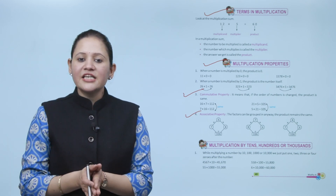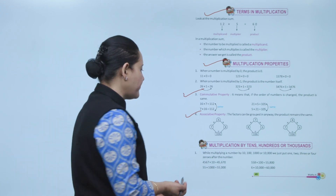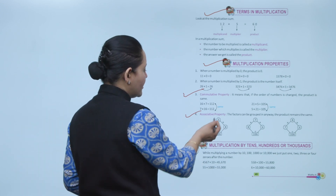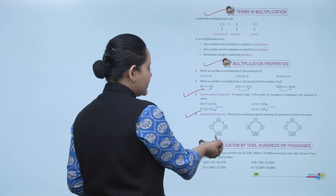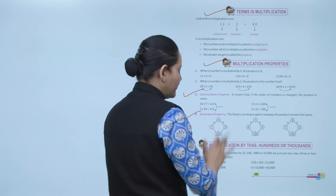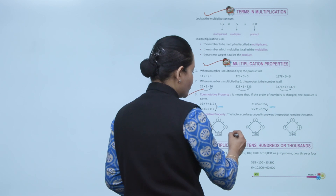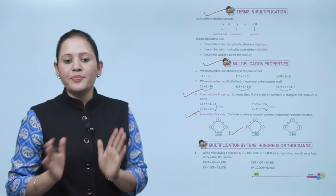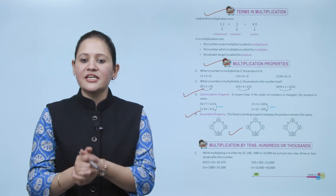Next is the associative property. The factors can be grouped in any way and the product remains the same. For example, 7 into 6, then multiplied by 8, gives 336. Or we can change the grouping: 8 into 7, then multiplied by 6, gives the same answer, 336. We can group the numbers in any order and the product will remain the same.